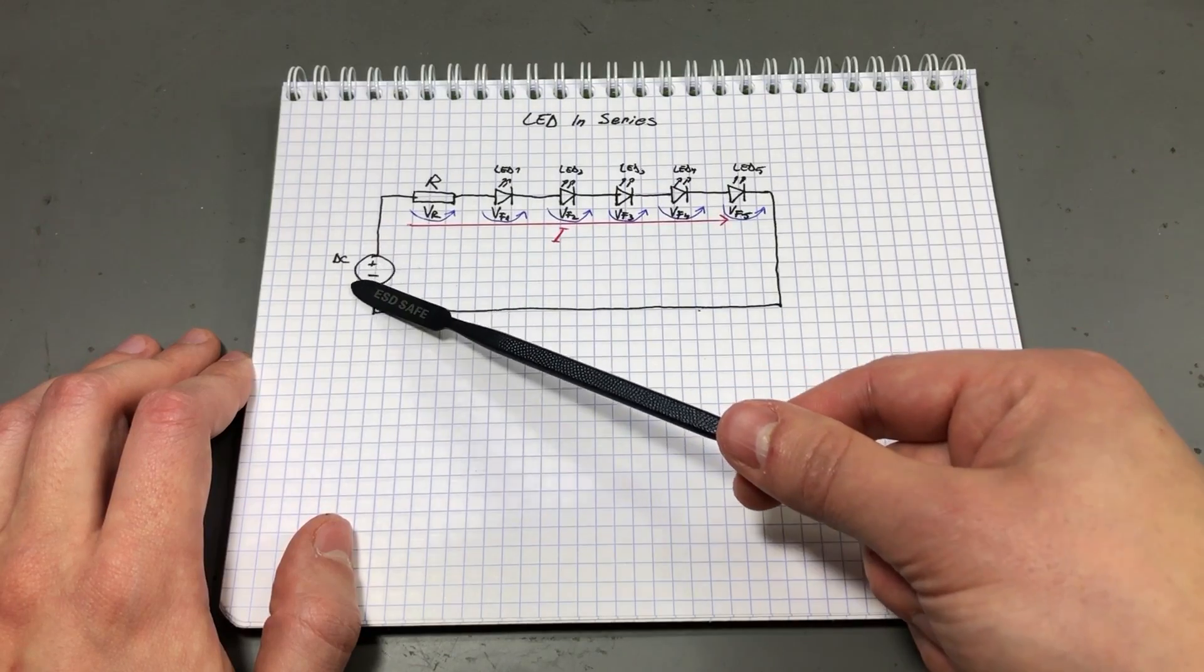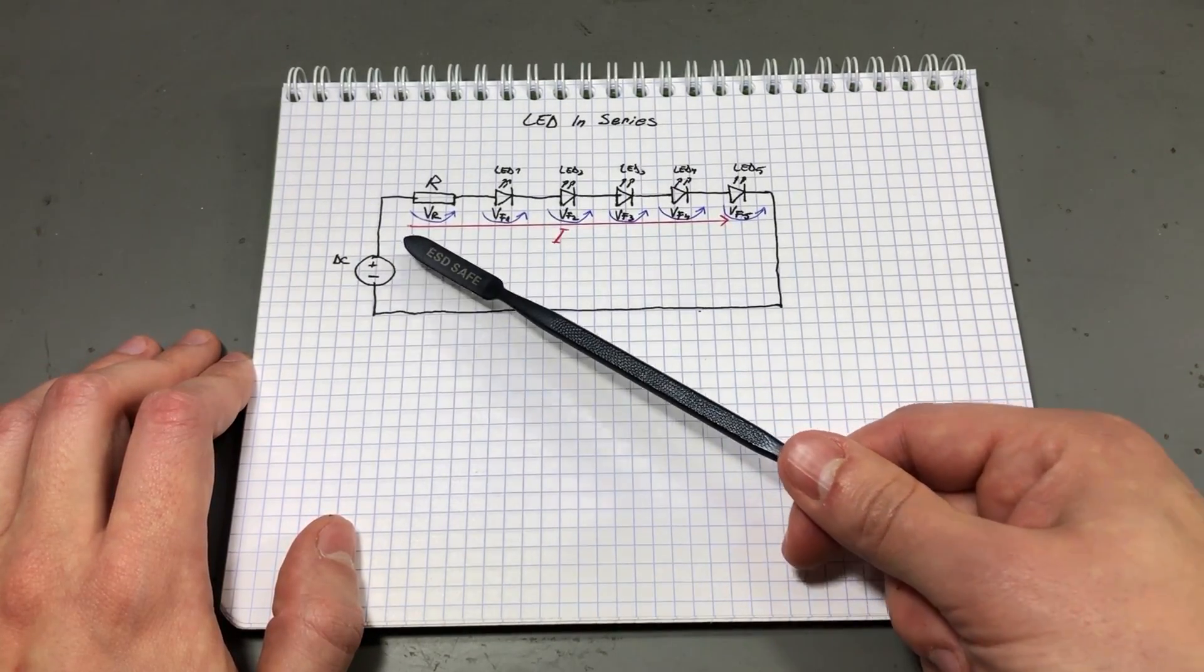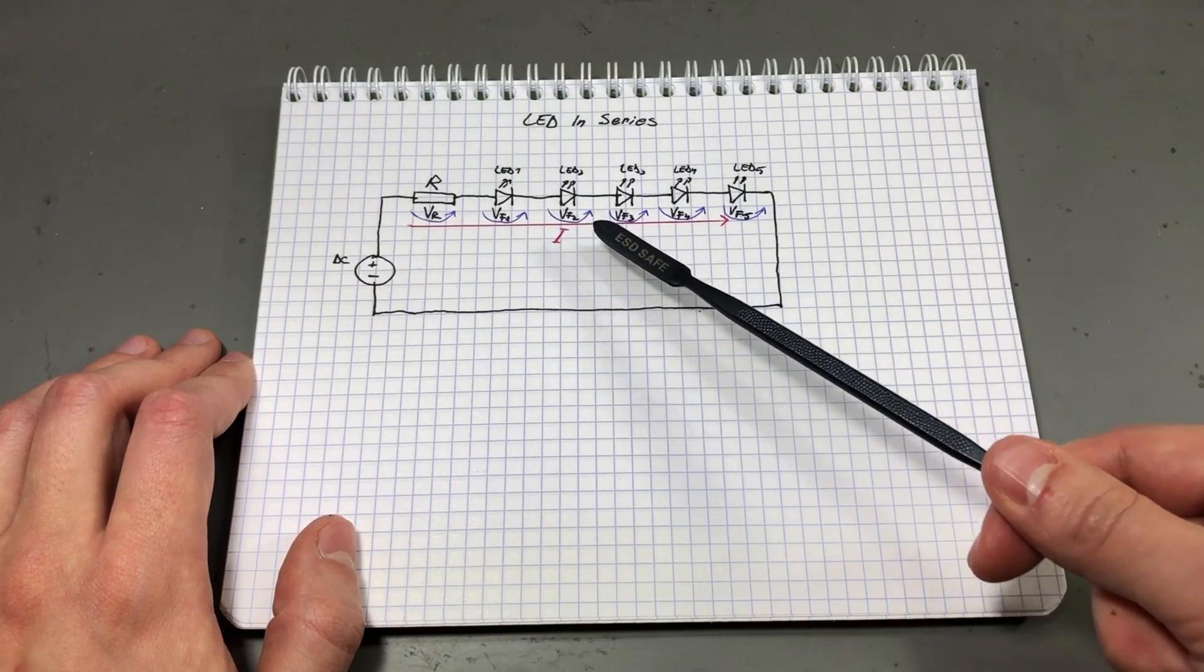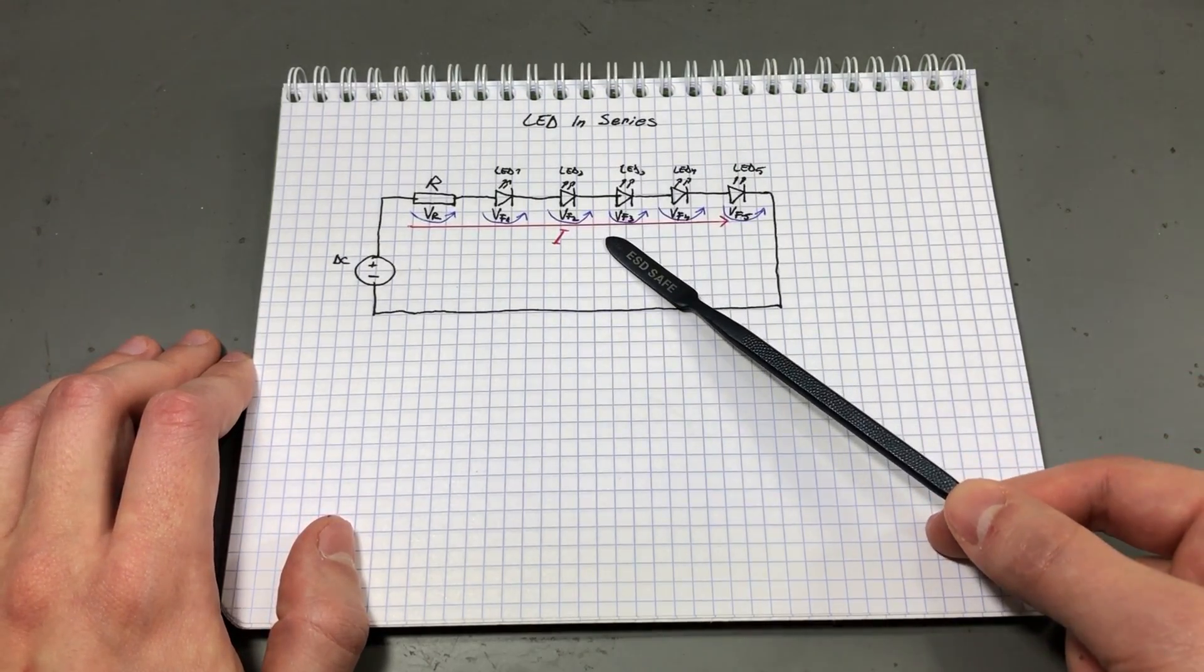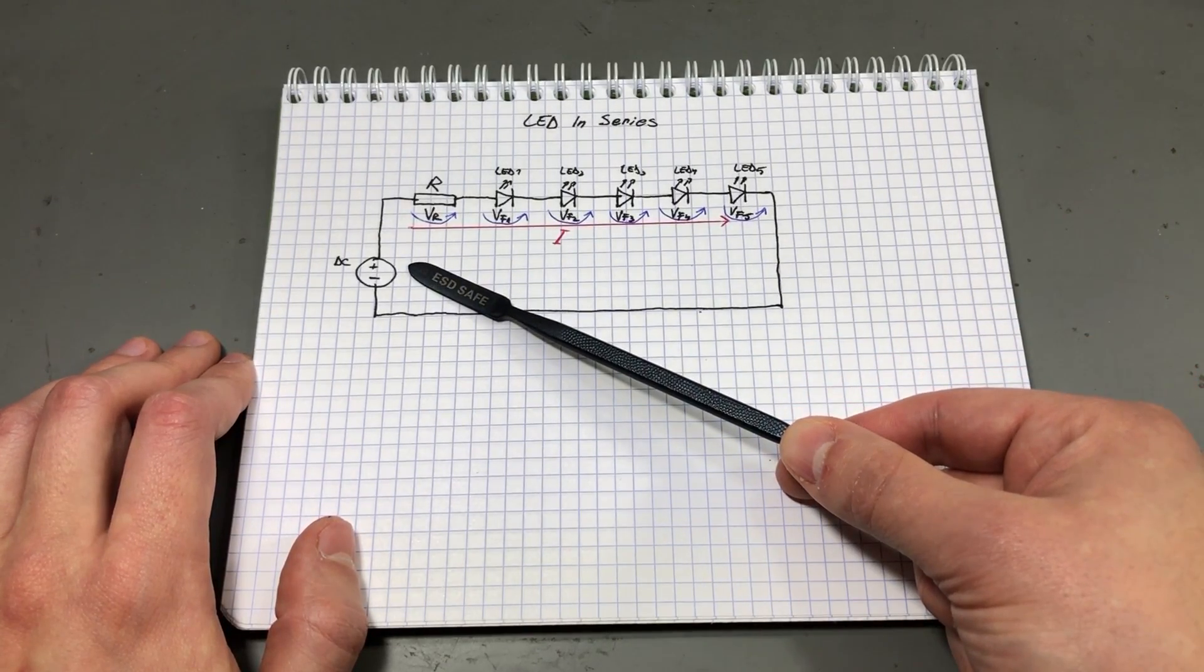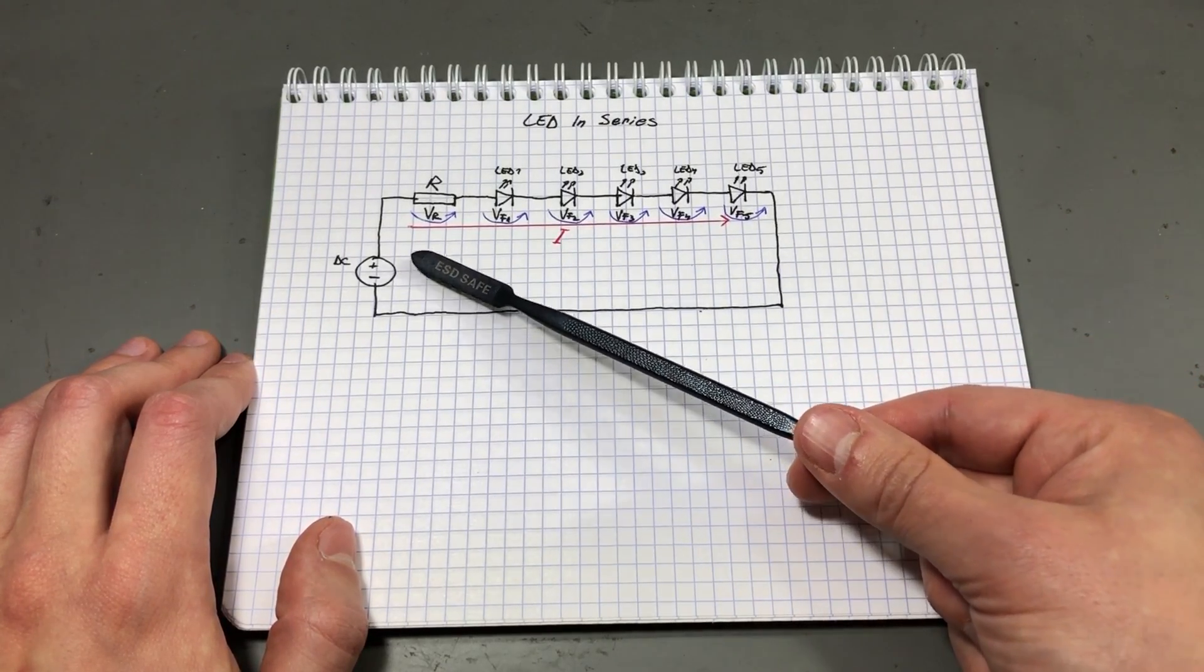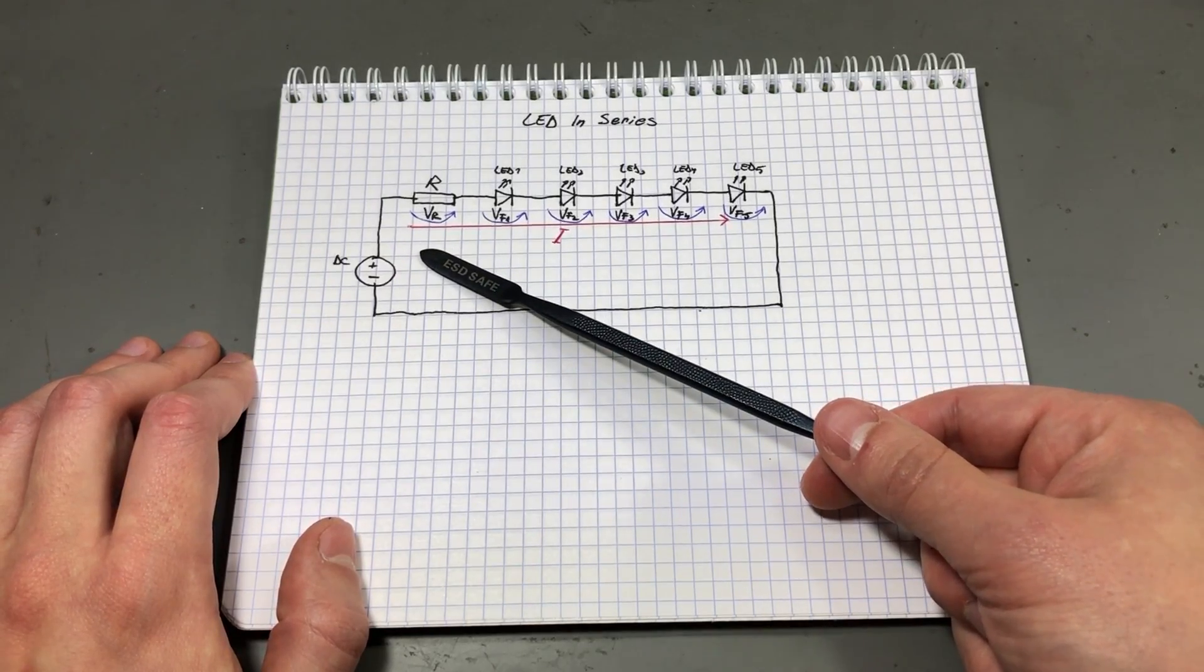Our DC source right here would have to be higher than VR plus VF1 plus VF2 plus VF3 plus VF4 plus VF5. So that's one drawback of this circuit. We need a higher drive voltage. But let's say we can easily increase that either by increasing the number of battery cells or by using a higher voltage source.